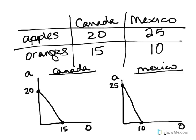Now, let's say that right now Canada and Mexico don't specialize in the production of one crop over another — they both devote equal resources to the production of apples and oranges. Then they're probably producing right in the middle of their production possibility curve. That would mean Canada is producing 10 apples and 7.5 oranges. Mexico would be in the middle of their production possibility curve, producing 12.5 apples and 5 oranges.